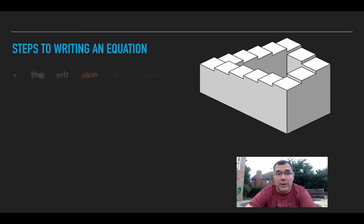Here's some steps to writing an equation. We're going to identify the variable. That's the thing that we don't know, and we're going to give it a name, usually a letter.